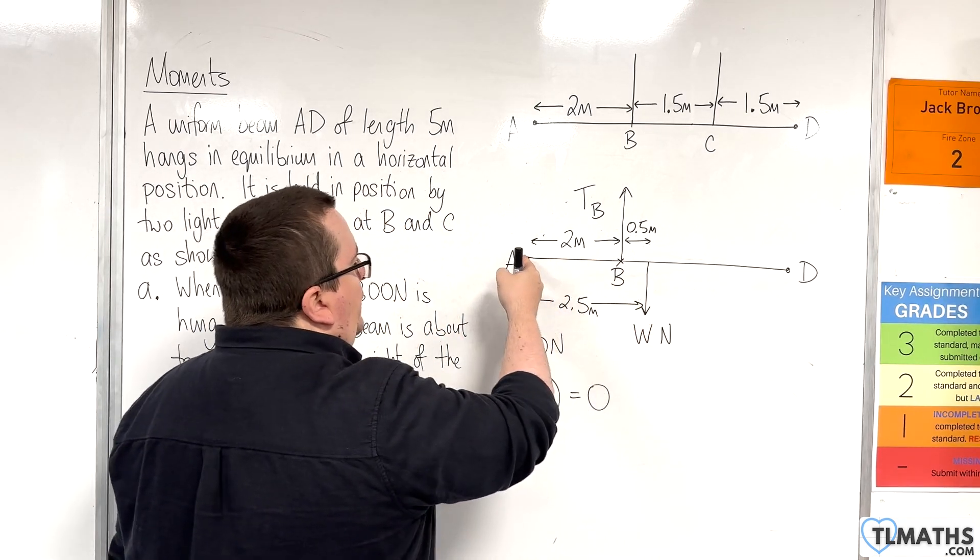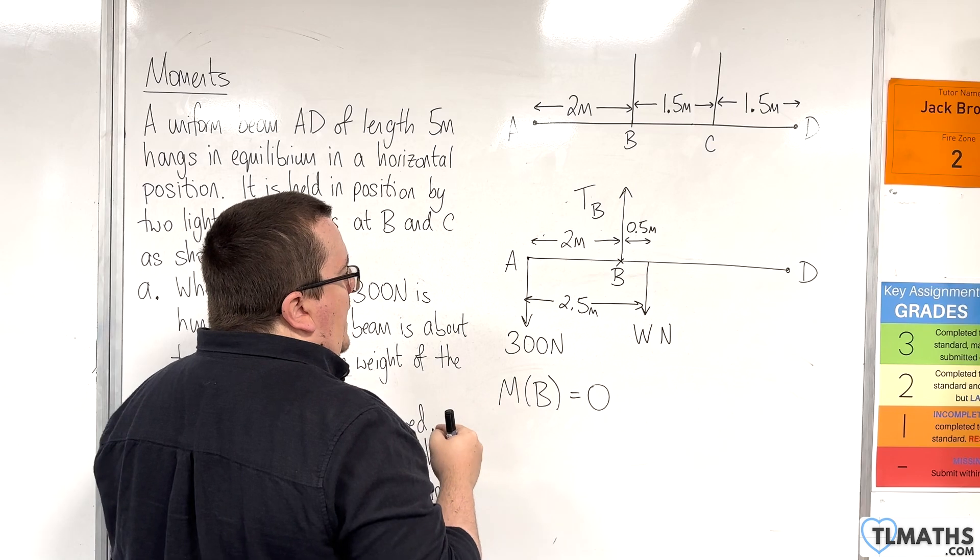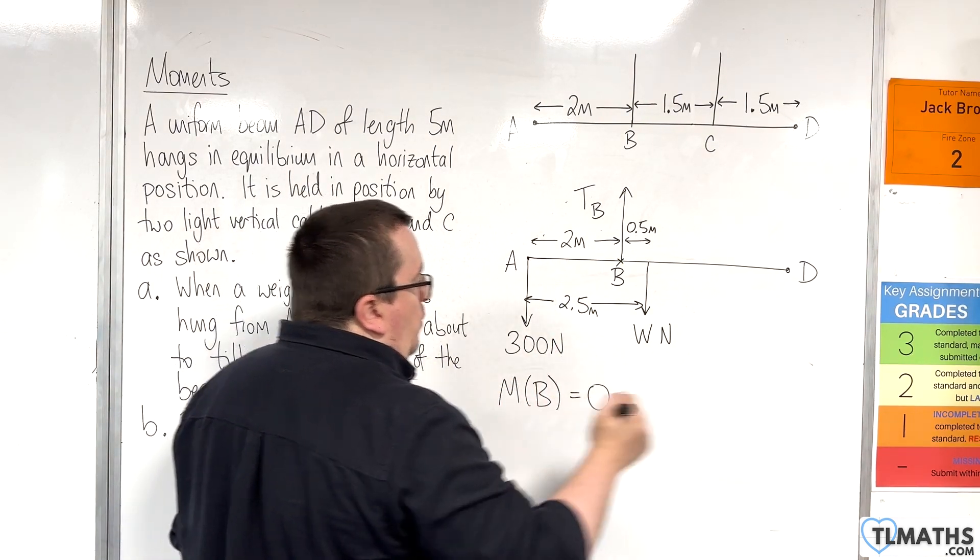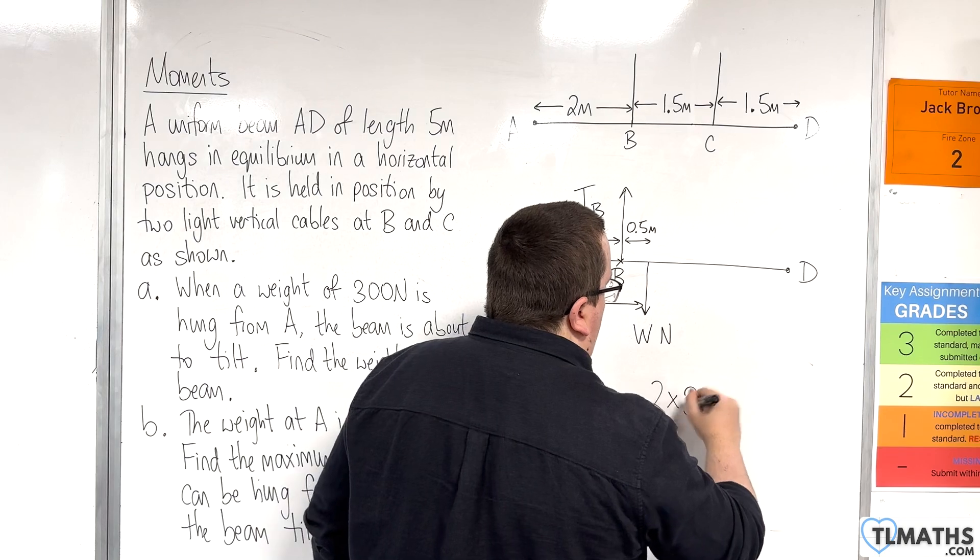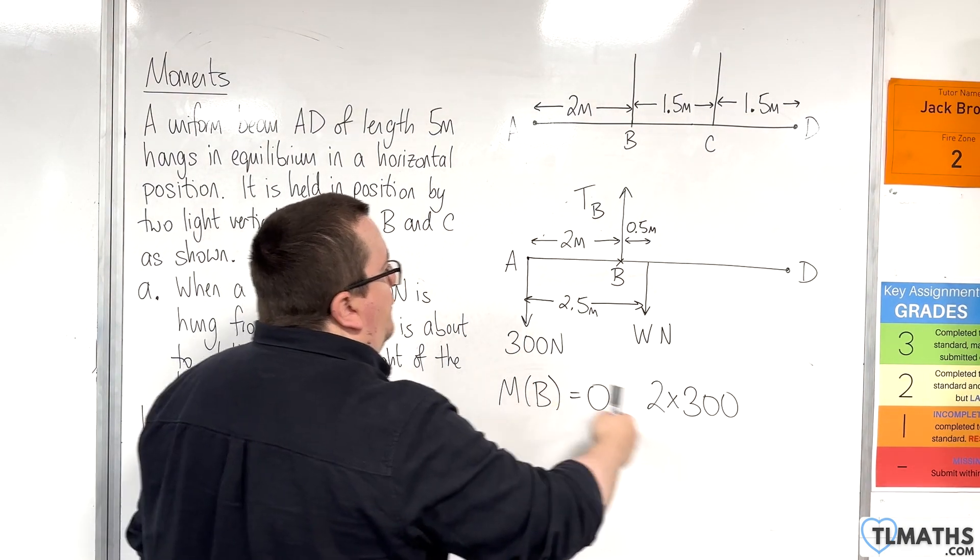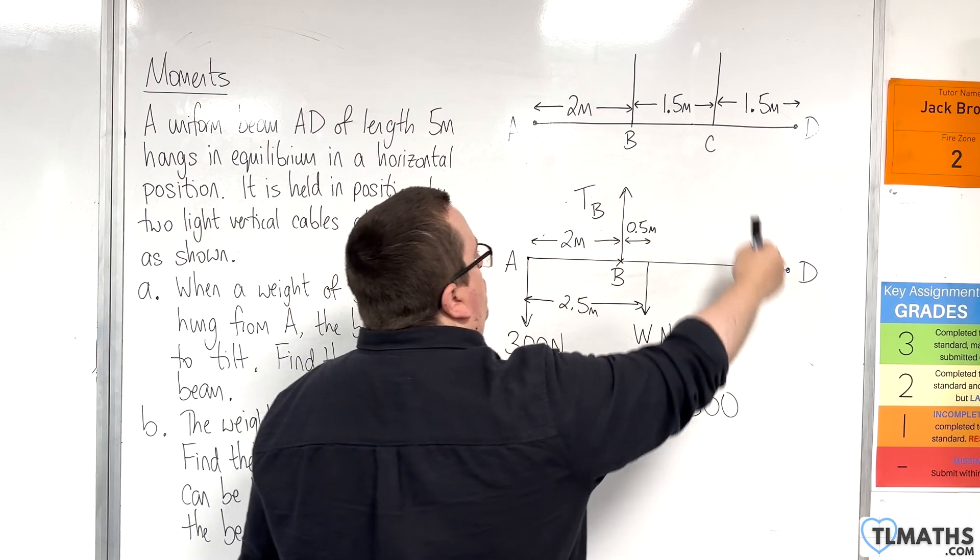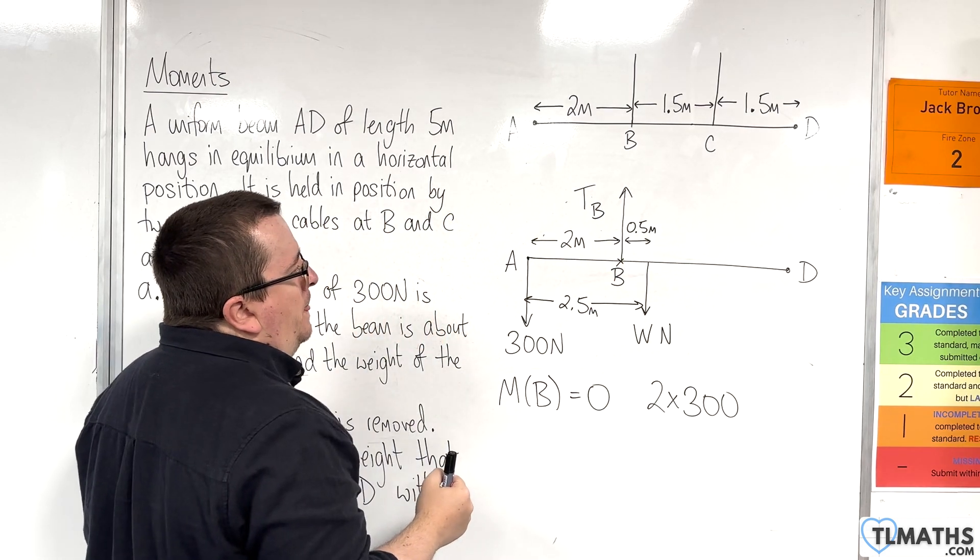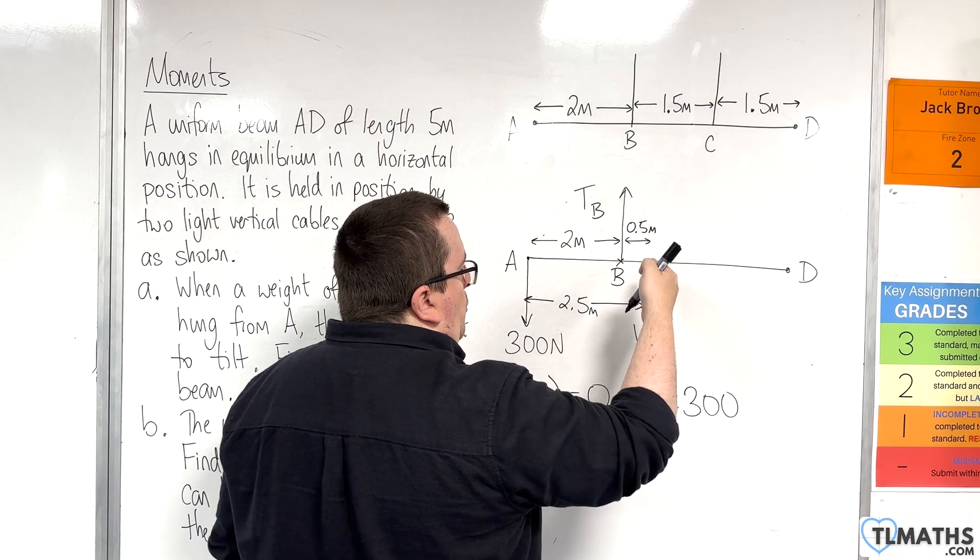So, taking moments about point B, let's consider the force at A first. Now this is 2 metres away, with a 300 newton force. Now this is going to create a turning effect that is going in this direction round. So, anti-clockwise, and so that is positive.